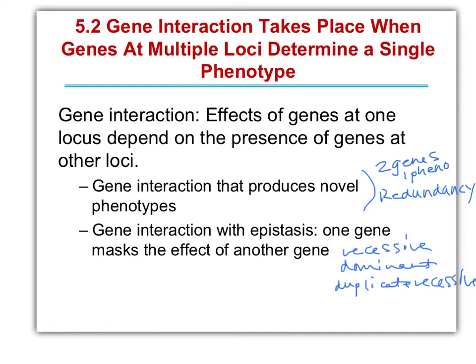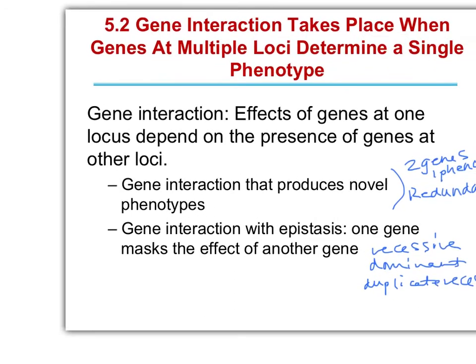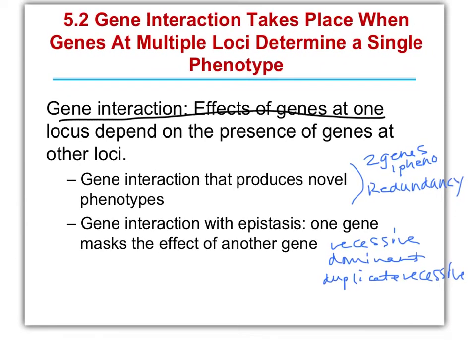The first extensions were allele interactions and how phenotypes changed when different alleles got together versus how complete dominance works. Remember, genotypes don't change. It's only the phenotypes when we talk about allele interactions. The same as with gene interactions — it's always the phenotype that changes, not the genotype. When we talk about gene interactions, we're always talking about the effects of genes at one locus depending on genes at another locus, so we're talking about two different genes — not two alleles, two separate genes — but in general, these are all contributing to one phenotype.